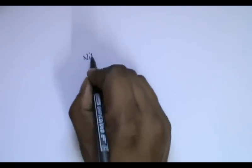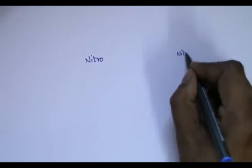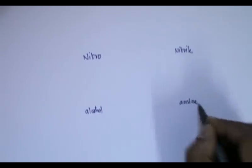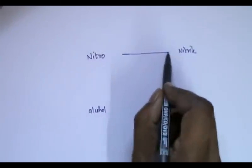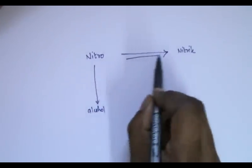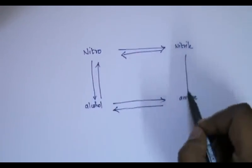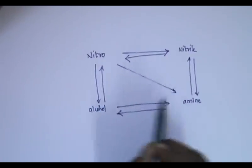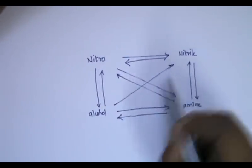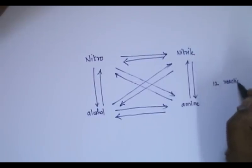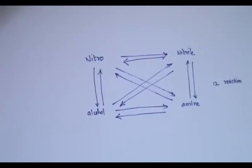Similarly, I can go for four functional groups also. For example, say nitrile, nitro, alcohol, and amine. Now check the possibilities. There are around twelve reactions. Just in one page or one chart, you can go for twelve reactions or twelve conversions.